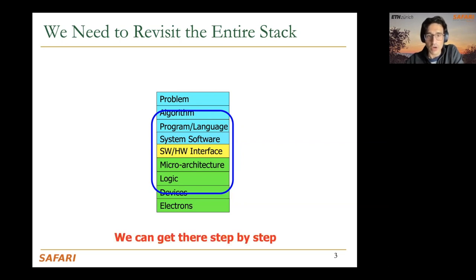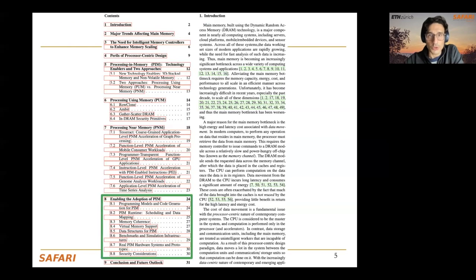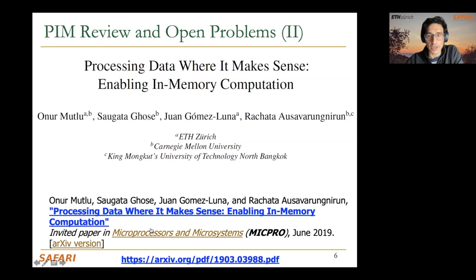You've already seen examples like SIMDRAM where we change the way we use devices to enable computation. Many of the topics covered in this course are collected in the book chapter 'A Modern Primer on Processing in Memory,' publicly available on arXiv. Section 8 is devoted to the different challenges needed to enable the adoption of processing in memory. There is also a shorter version published in the IEEE Micro journal.